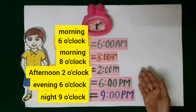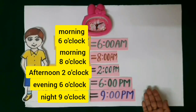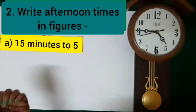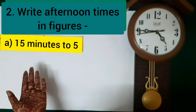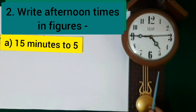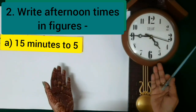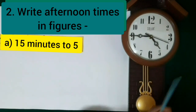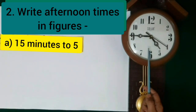Now you have understood how to write the time in a.m. or p.m. Now we will do question number 2 — write afternoon times in figures. Part A is 15 minutes to 5. It is 15 minutes to 5 on the clock.